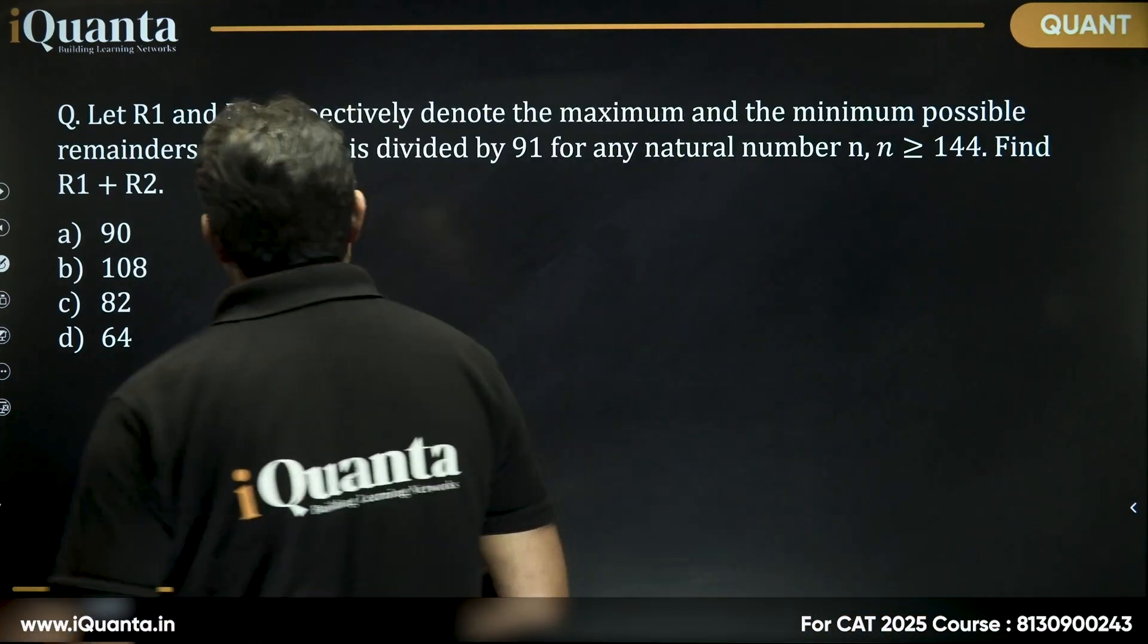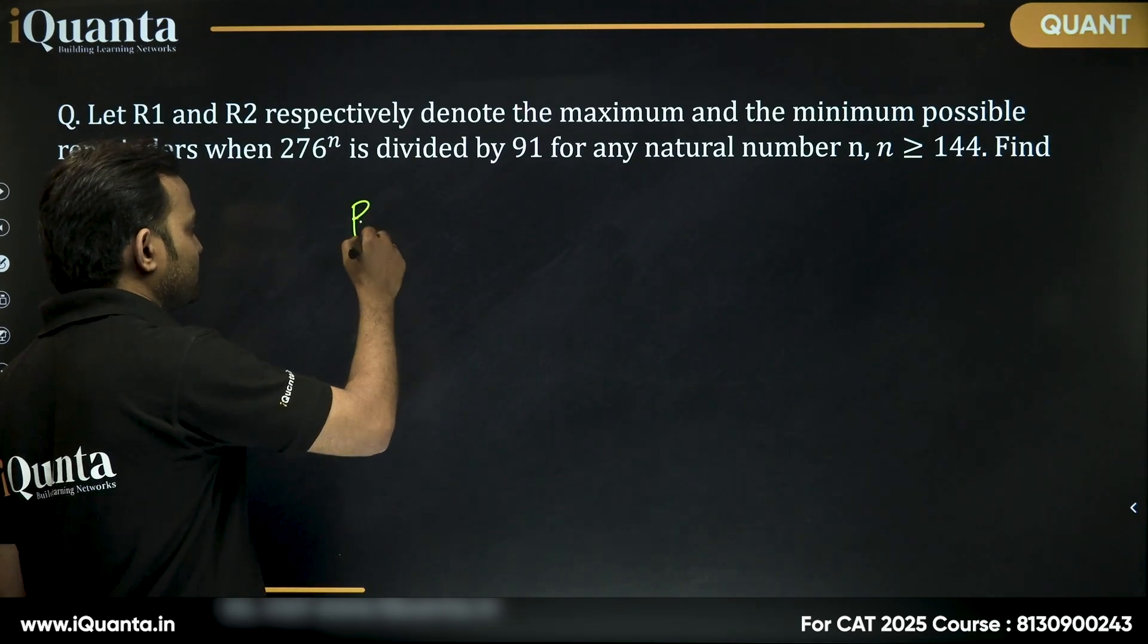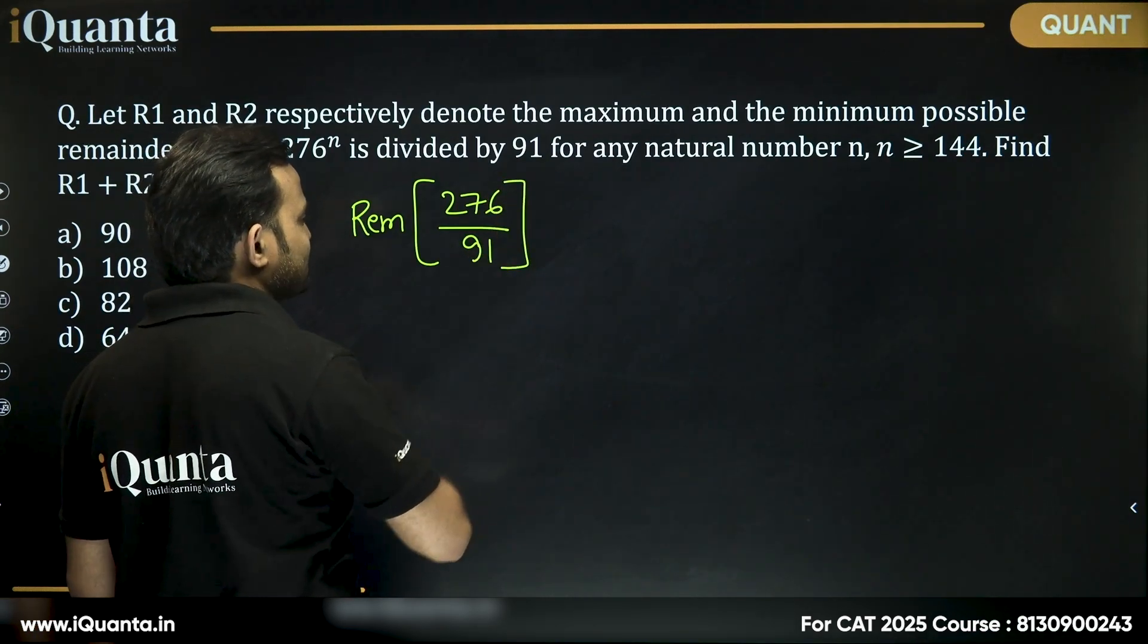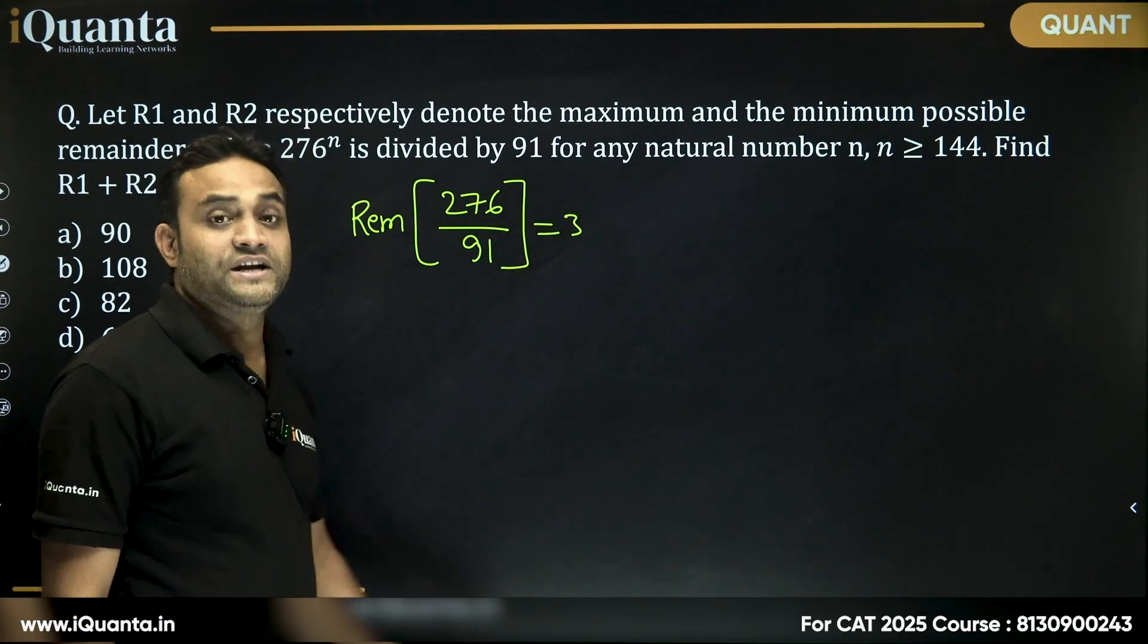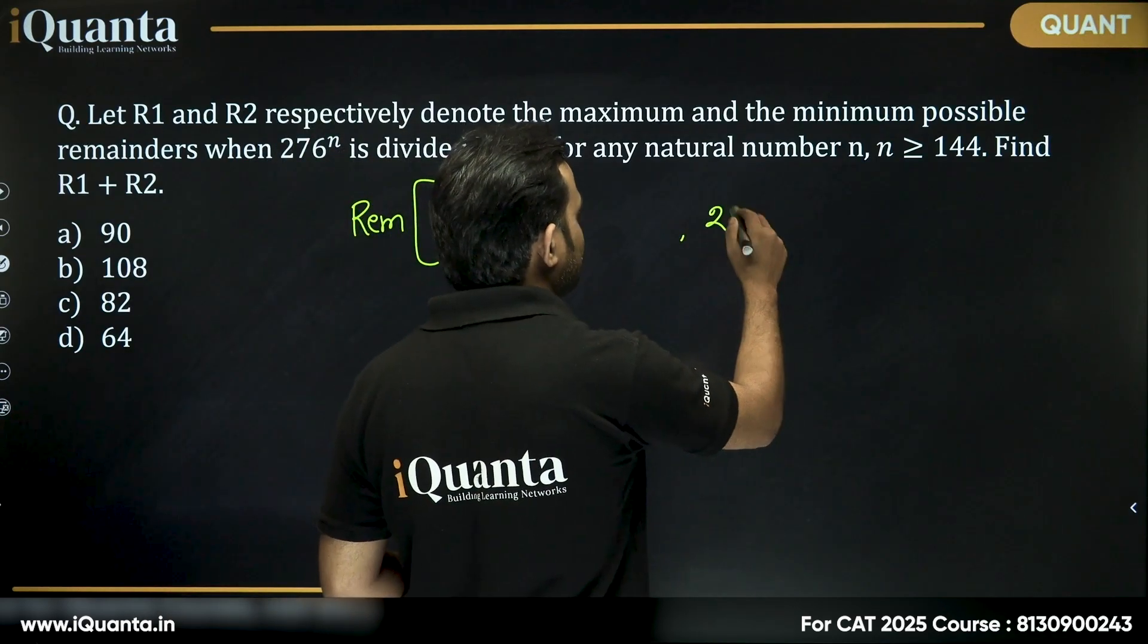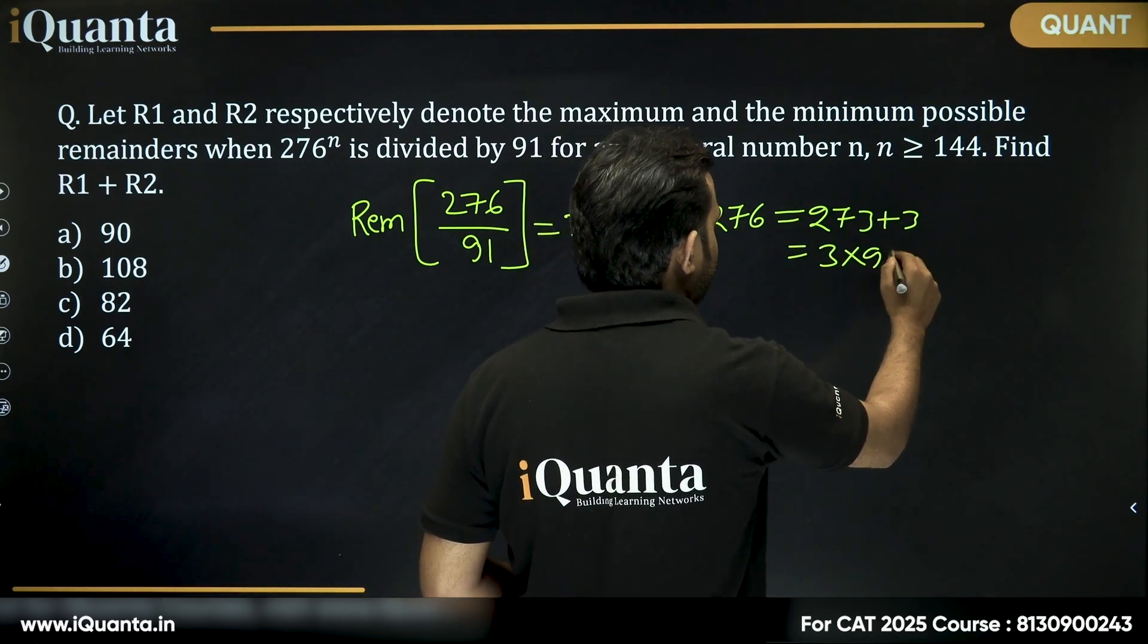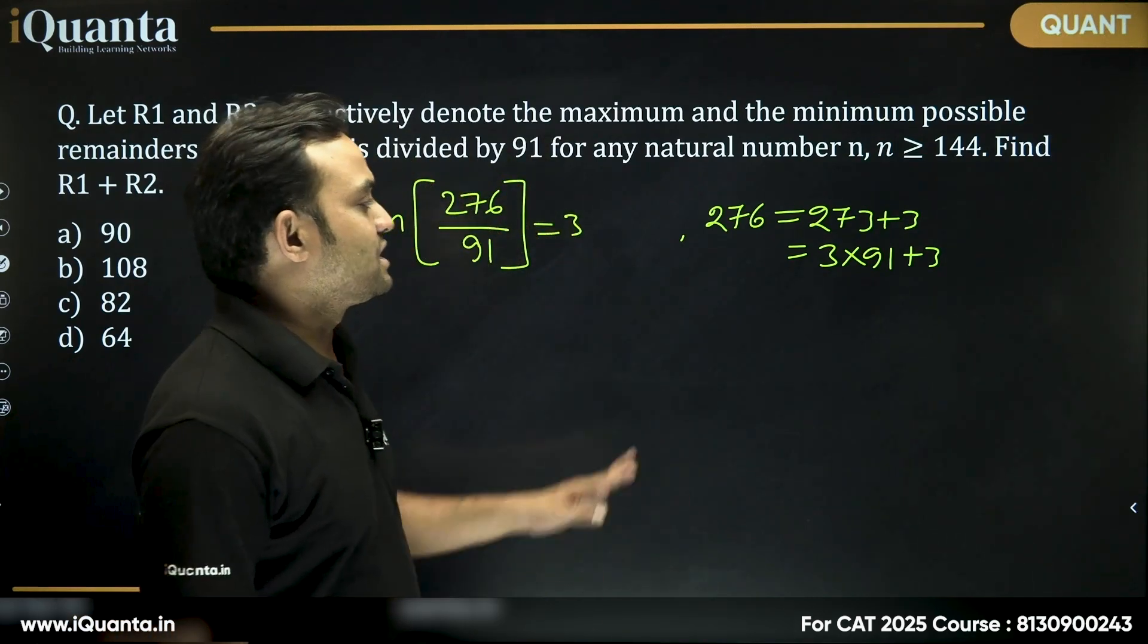Before we start solving this question, if I try to find the remainder when 276 is divided by 91, this is equal to 3 because 91 into 3 is 273. 276 is 273 plus 3, which is equal to 3 into 91 plus 3. So till 273 it will be cancelled out, 3 will be the remainder.